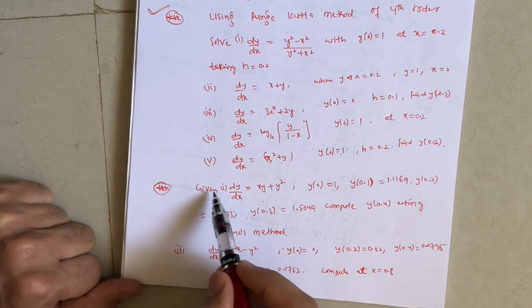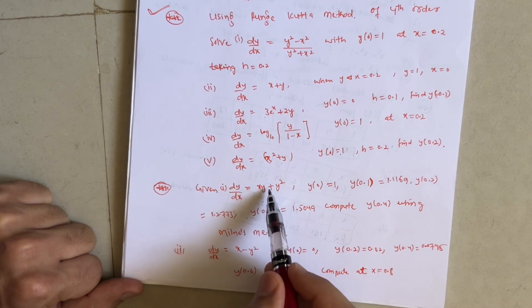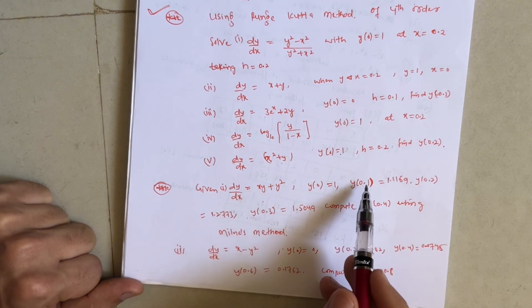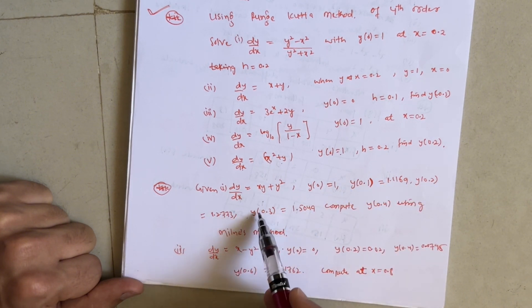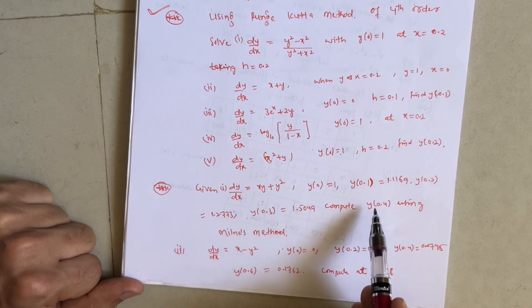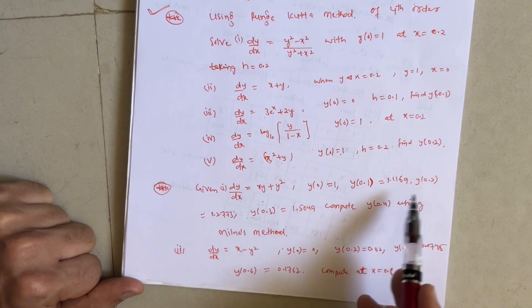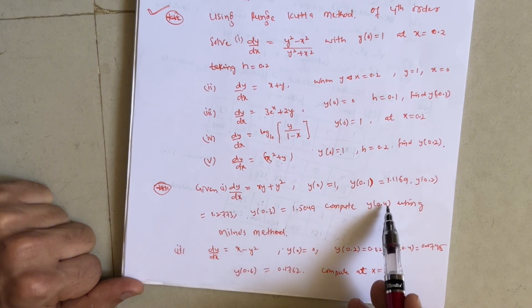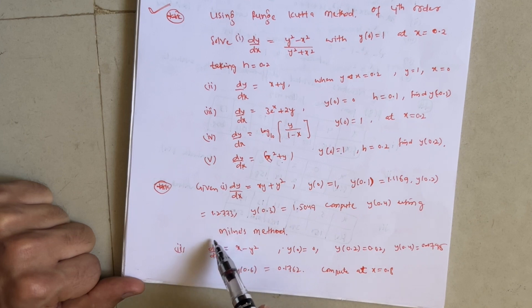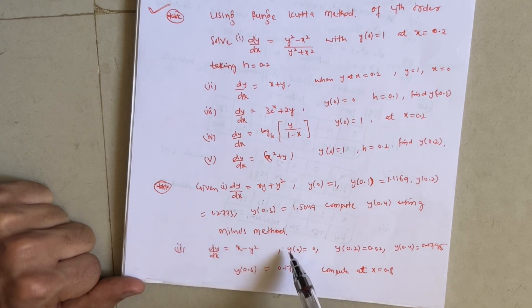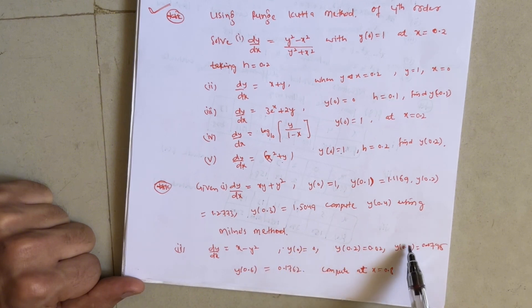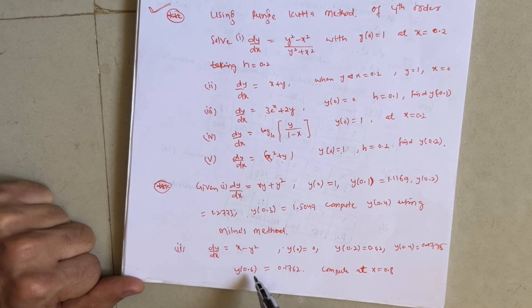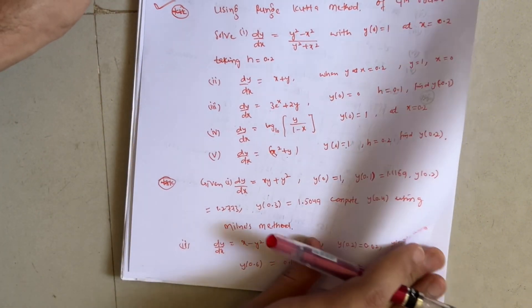Next we have Milne's method. The differential equation dy/dx = xy + y², y(0) = 1, y(0.1) = 1.1169, y(0.2) = 1.2773, y(0.3) = 1.5049 — compute y at 0.4 using Milne's method. Similarly, dy/dx = x − y², y(0) = 0, y(0.2) = 0.02, y(0.4) = 0.0795, y(0.6) = 0.1762 — compute y at x = 0.8.